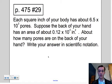So we only have one example to work on today. Each square inch of your body has about 6.5 times 10² pores. Suppose the back of your hand has an area of about 0.12 times 10² square inches. About how many pores are on the back of your hand? Write your answer in scientific notation. So what we want to do is we're going to go ahead and write this down.